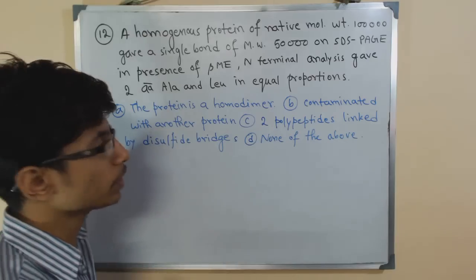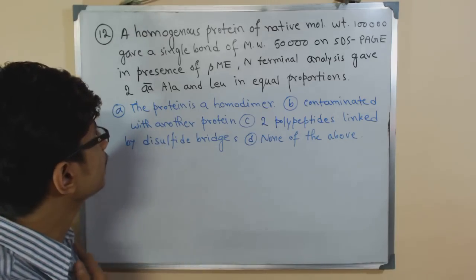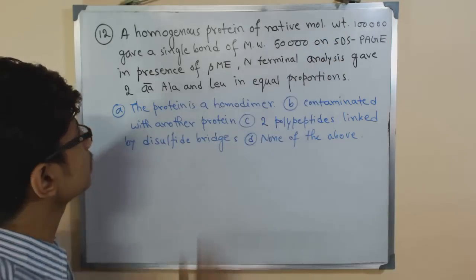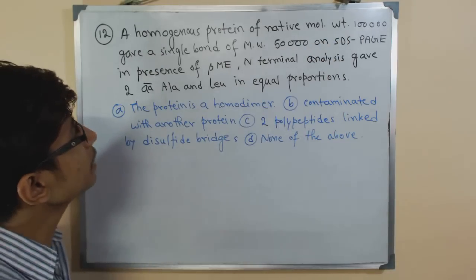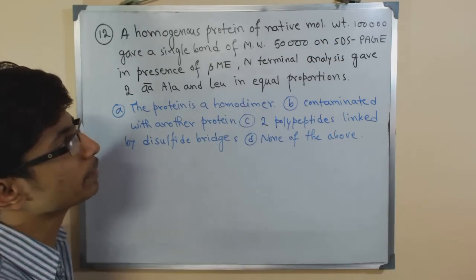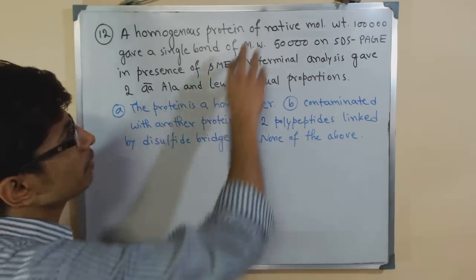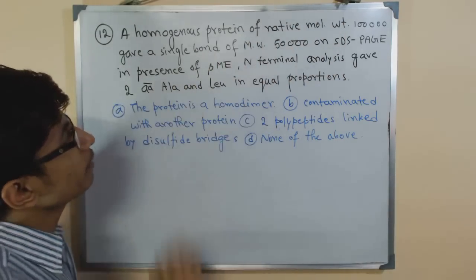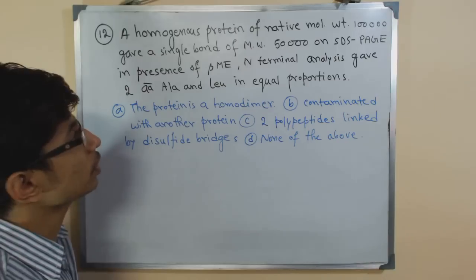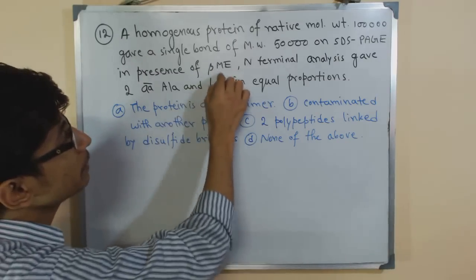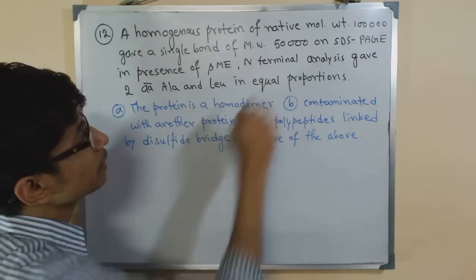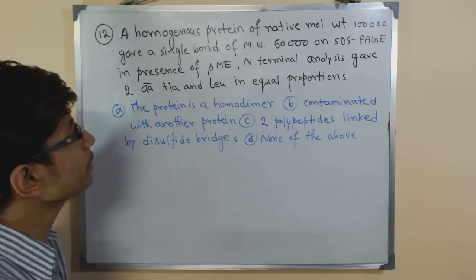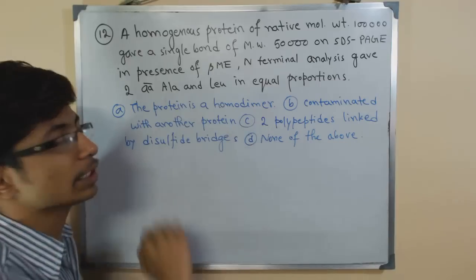A homogeneous protein of native molecular weight of 1 lakh Dalton gave a single band of molecular weight of 50,000 on SDS-PAGE. Whatever molecular weight they are providing, whatever unit you can put. In presence of beta-mercaptoethanol, N-terminal analysis gave 2 amino acids, alanine and leucine, in equal proportions.